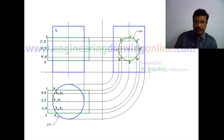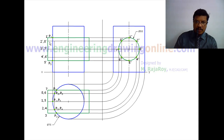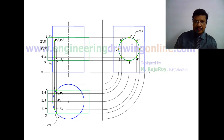Now transfer all these points to the front view. P1 and P5 points are being transferred now. Here 1 dash is there, so automatically here we will get P1 dash, and here we will get P5 dash. Now draw a projector passing through P2 and P8. Here 2 dash and 8 dash is there; 2 is visible, 8 is invisible. So here you will get P2 dash, P8 dash. Here you will get P4 dash, P6 dash. For P3 and P7, draw another projector passing through P3 and P7. Here you will get P3 dash and P7 dash.